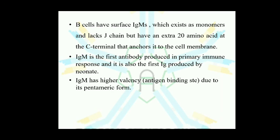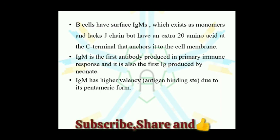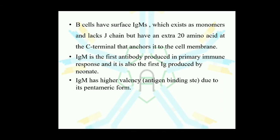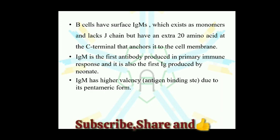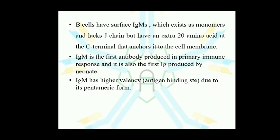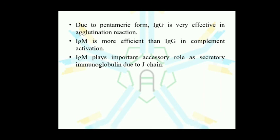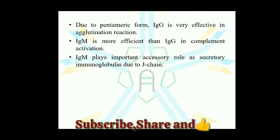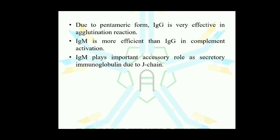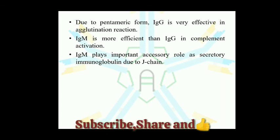IgM is the first antibody produced in the primary immune response — whenever an antigen is introduced to the body for the first time, IgM is synthesized. IgM has higher valency due to its pentameric form and is responsible for effective agglutination. IgM is more efficient than IgG in complement activation and also plays an important accessory role as a secretory immunoglobulin due to the J-chain.